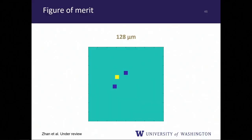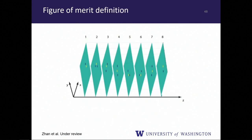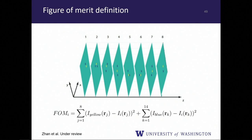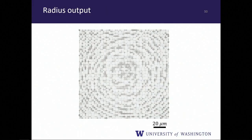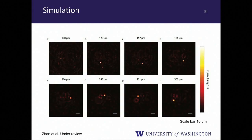In simulation, the optimization produces a spot that rotates counterclockwise around the optical axis as we step through the eight focal planes, each separated by 120 µm.